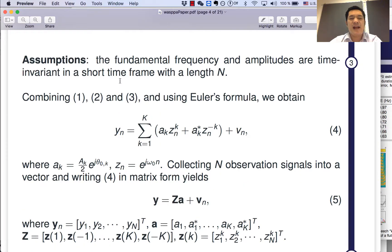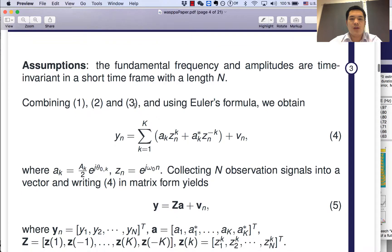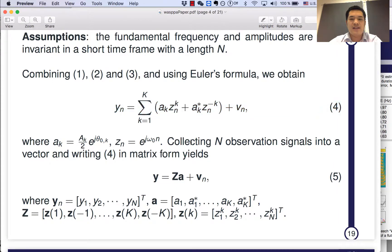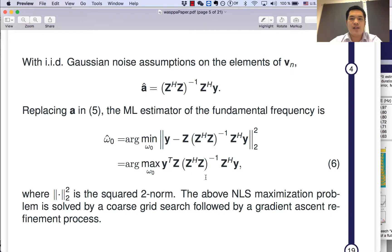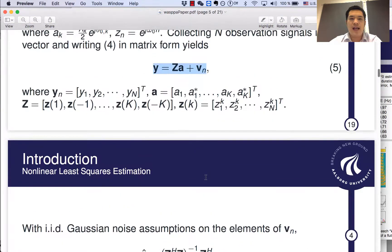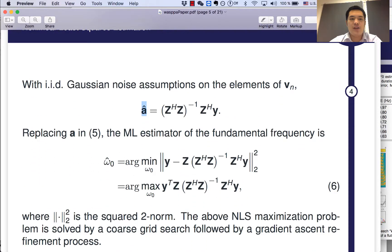And traditionally, the fundamental frequency and amplitudes are time invariant in your short time frame with a certain length N. If we combine the equation one, two, and three, and using Euler's formula, we can obtain the equation as four, and then collecting N observation signals into a vector and writing four into a matrix form. It can be written as a linear form, five. By using the IID Gaussian noise assumption on the elements of the noise, we can easily obtain the amplitude estimates, the least squares estimates of the amplitudes.